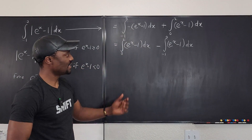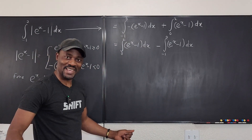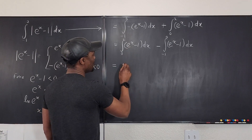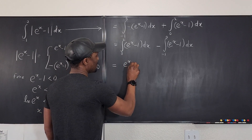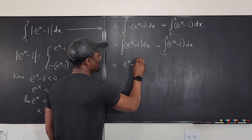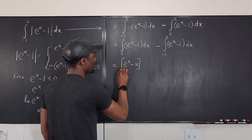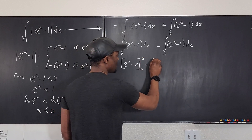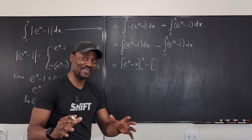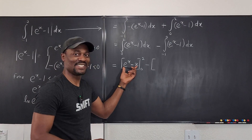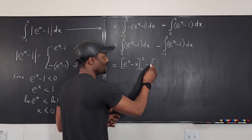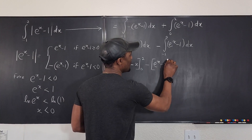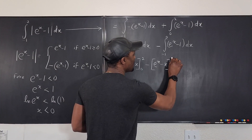Now we can take our integrals and evaluate and we get our answer. So if we integrate e to the x minus one, we get e to the x minus x. Evaluate it from zero to two, minus — we integrate the same thing — so that's the nice thing about this. You're most likely going to get the same antiderivative, just with different boundaries. So this is e to the x minus x evaluated from negative one to zero.